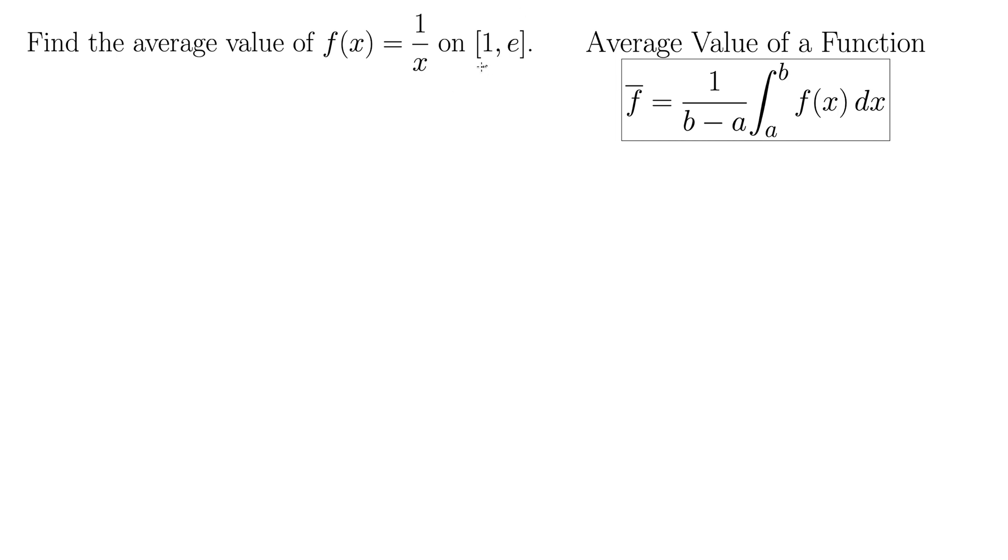Okay, so in this case a is 1 and b is e, so we have the average value of the function f bar equals 1 over e minus 1 times the integral from 1 to e of 1 over x dx.